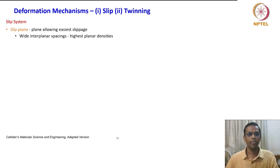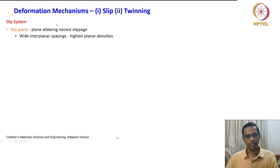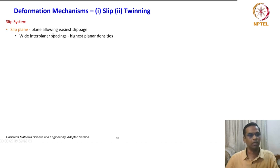Slip is described by a term called slip system. What is a slip system? A slip system consists of two quantities: one is the slip plane — a plane allowing the easiest slippage. In very simple terms, these are planes with wide interplanar spacings and highest planar densities.